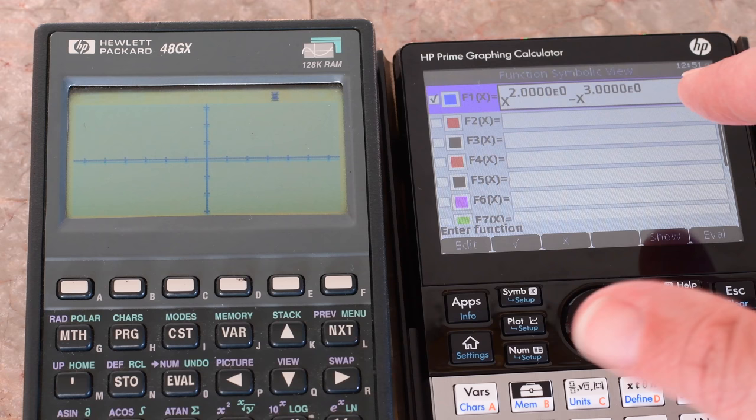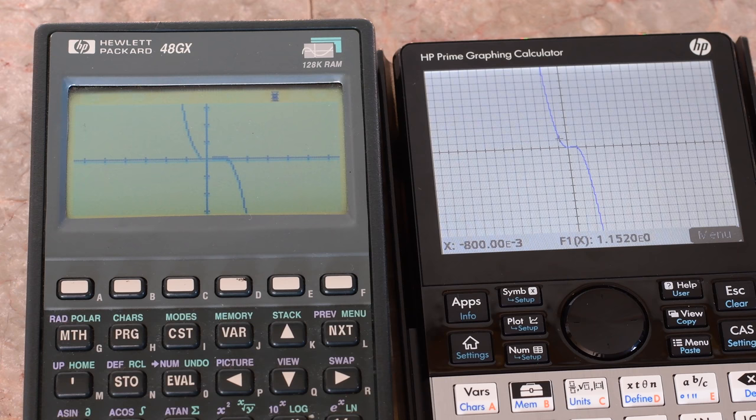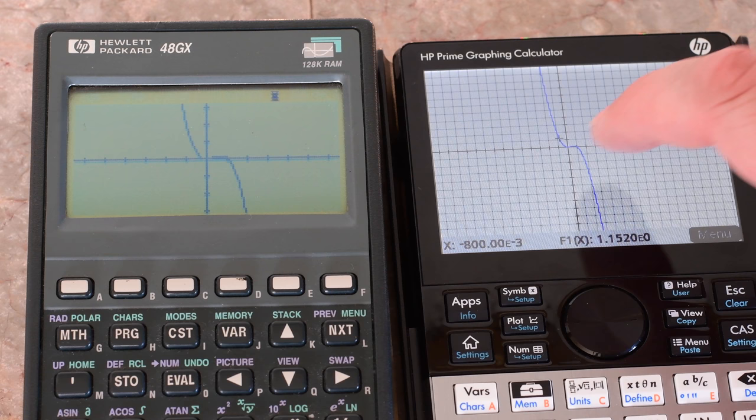Hit apps. Tap on function. I've put in the same function. And hit plot. So you can see the Prime finished basically immediately. And the 48 is still sort of thinking.